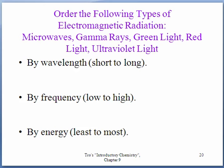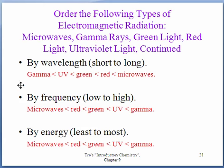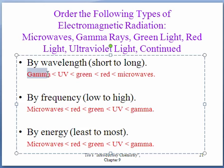Okay, let's take a look at the answers. Shortest to longest, gamma, of course, has the shortest then UV. And then within the visible spectrum, green has shorter wavelength than red. And then microwaves have the longest wavelength.